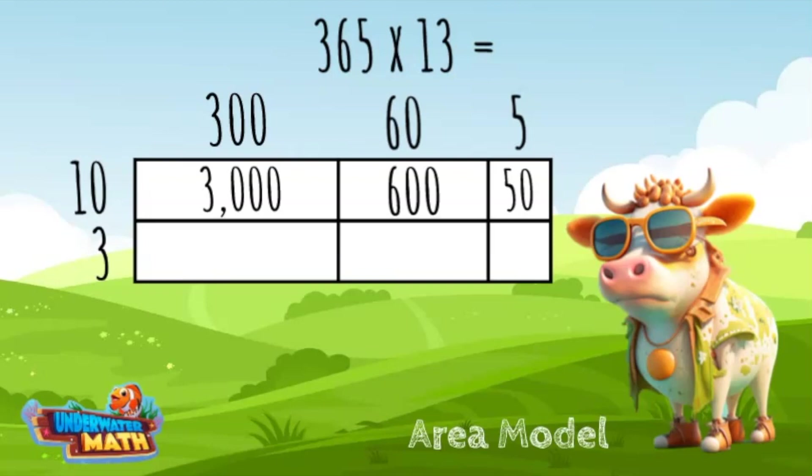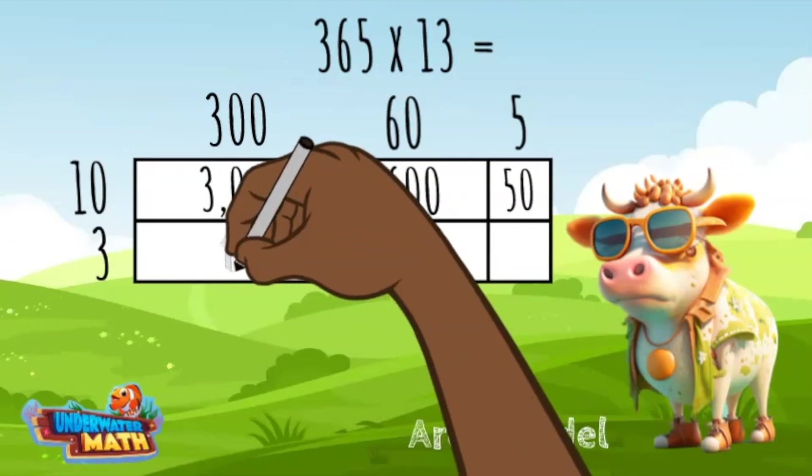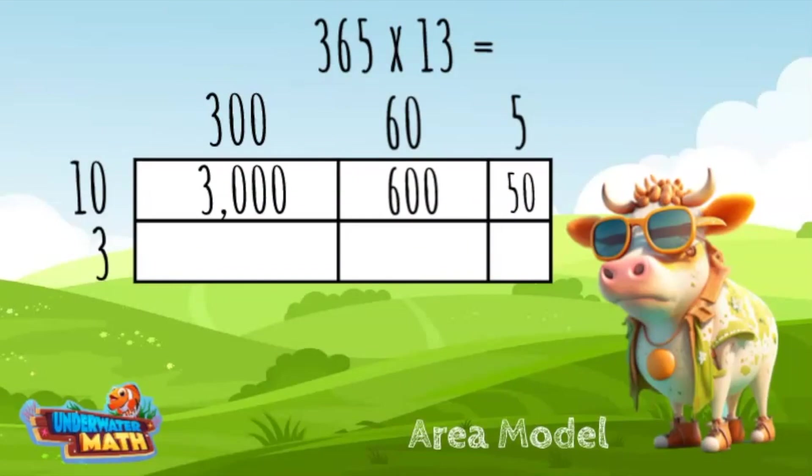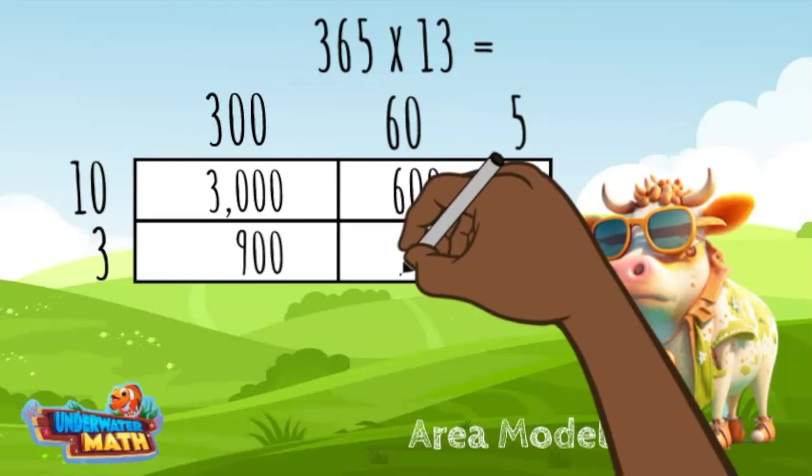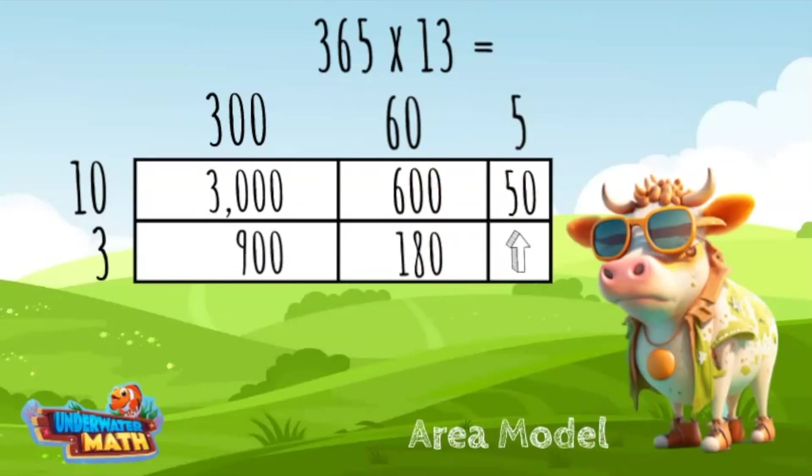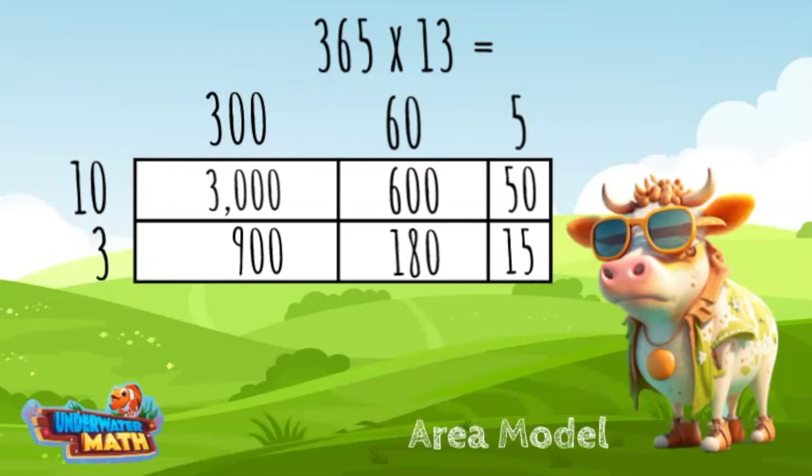I repeat the process with the number 3. This time the products will be written in the bottom row. 3 times 300 equals 900, 3 times 60 equals 180, and 3 times 5 equals 15.